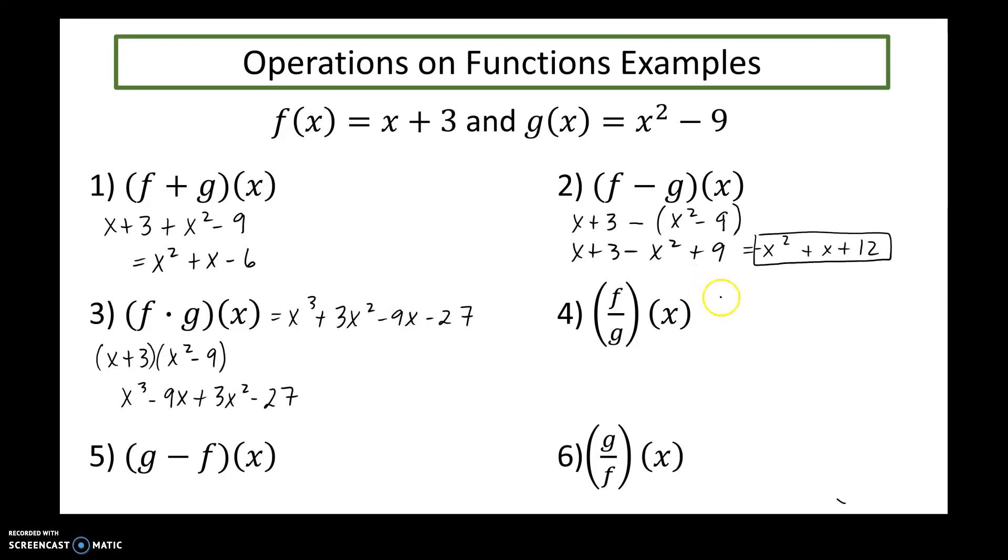f divided by g all over x squared minus nine. You are responsible, if any function can be factored in order to simplify the problem further, you are expected to do that. Denominator is a difference of perfect squares, so the resulting quotient is one over x minus three.